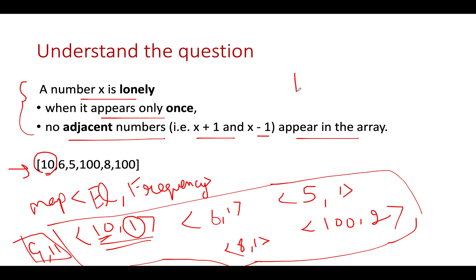Let's proceed. Next we see 6 with frequency 1. The first constraint is met. For the second constraint, I check for 5 and 7. If either is present in the map, I skip it. 5 is present in the map, so I skip this element—it won't be part of the answer.